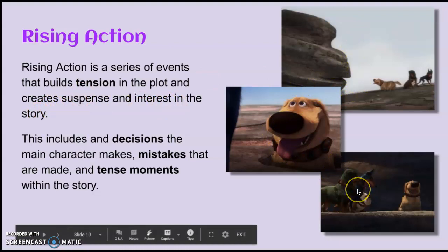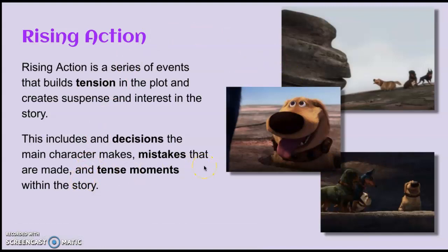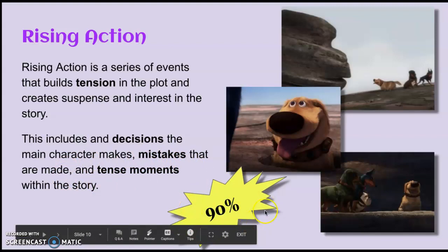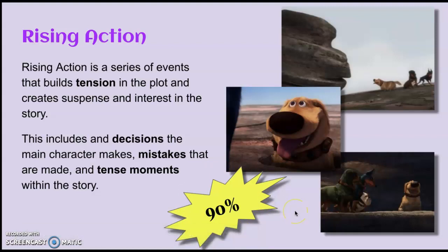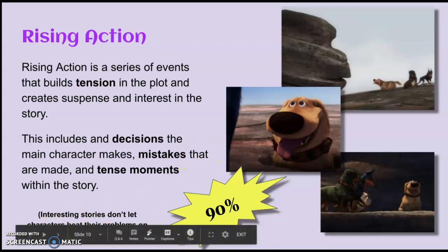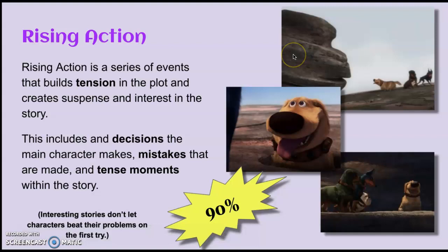Rising action is a series of events that builds tension in the plot and creates suspense and interest in the story. Here we have at least three pictures from the Doug's Special Mission film because the rising action is not just one or two things — it's usually a lot of events that lead up to the climax. The rising action includes any decisions that the main character makes, any mistakes that are made, any tense moments within the story. Please remember it is approximately 90% of the story and takes up most of the pages you're reading. Interesting stories do not let their characters beat their problems on the first try.